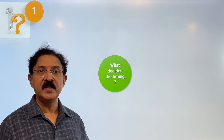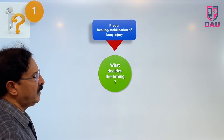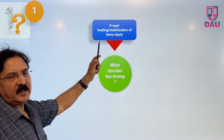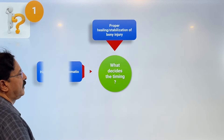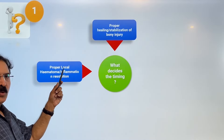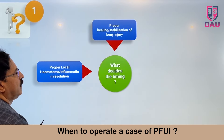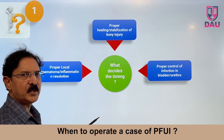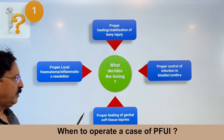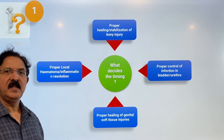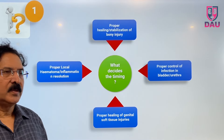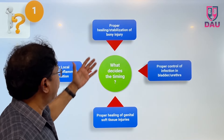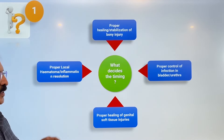The timing of surgery depends on four factors: first, proper healing and stabilization of the bony injury; second, proper local hematoma and inflammation resolution; third, proper control of infection in the bladder lumen, adjoining tissues, and urethra; and finally, proper healing of genital soft tissue injuries. We will now see these four factors one by one.